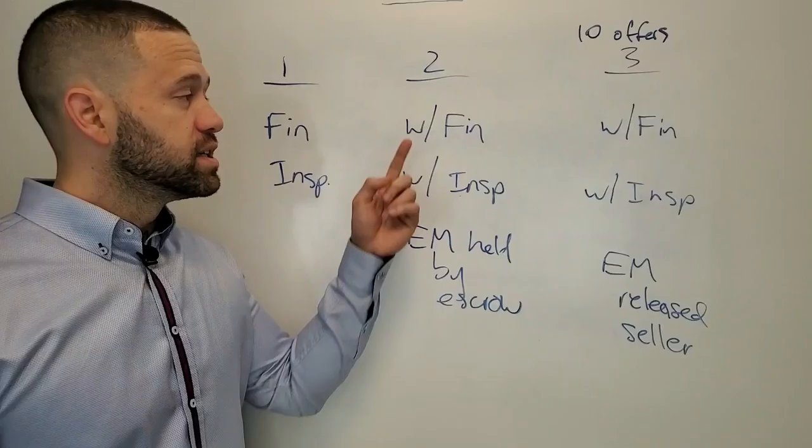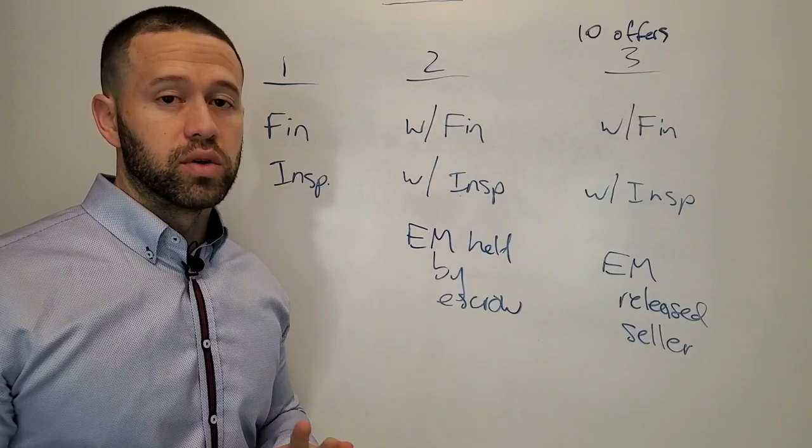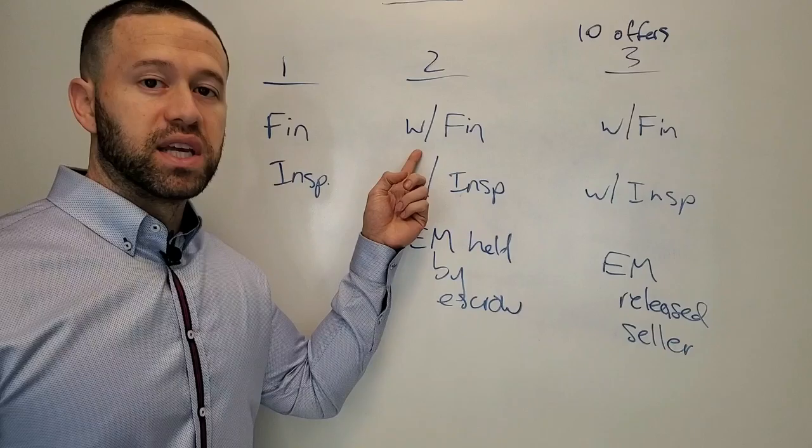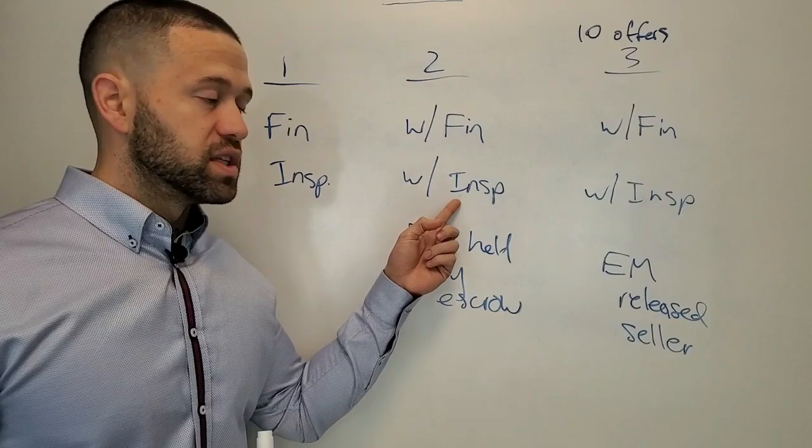Second scenario. This is like, let's say there's one or two other offers or something like that. So there is competition. You know you have to make your offer really airtight in order to win the deal. What you might do is you might waive financing and waive inspection. So you're so confident in financing, you don't need protection because you know it'll close. The loan won't be a problem.